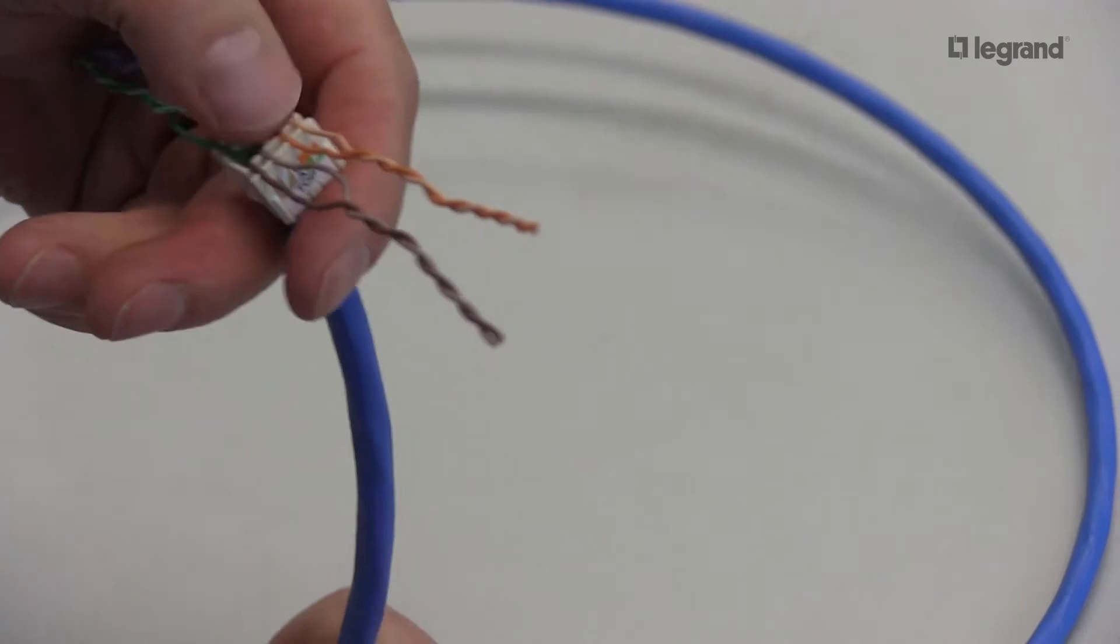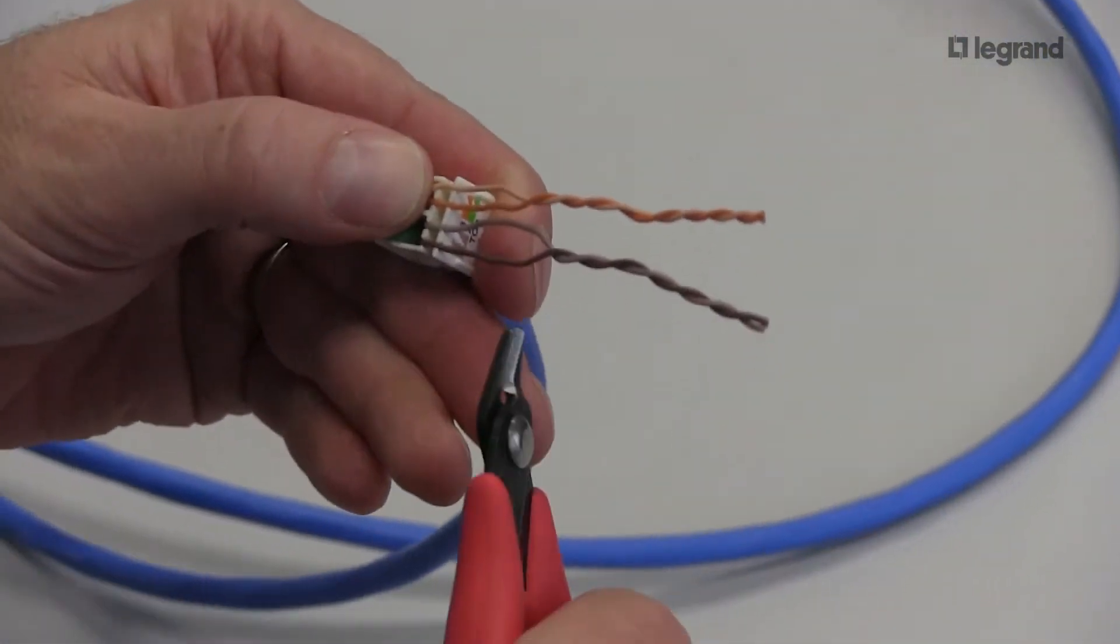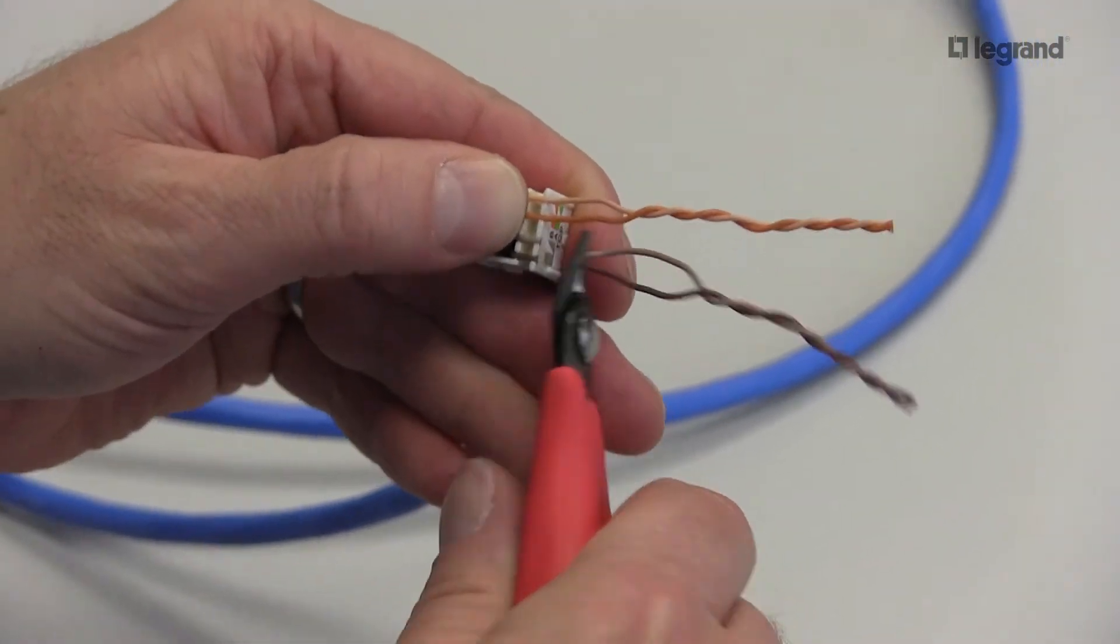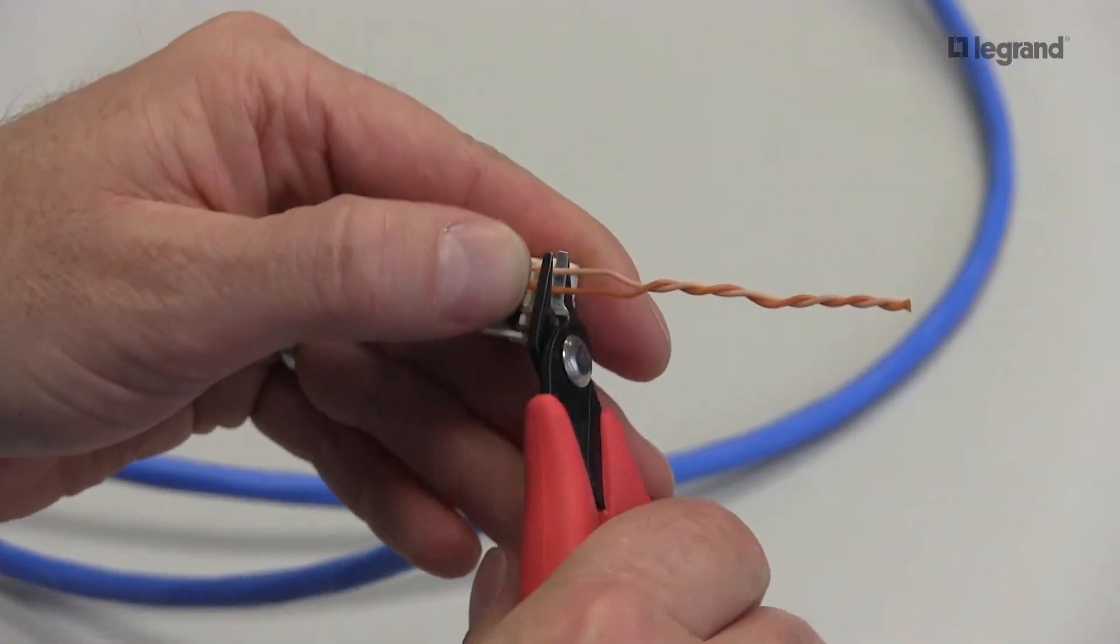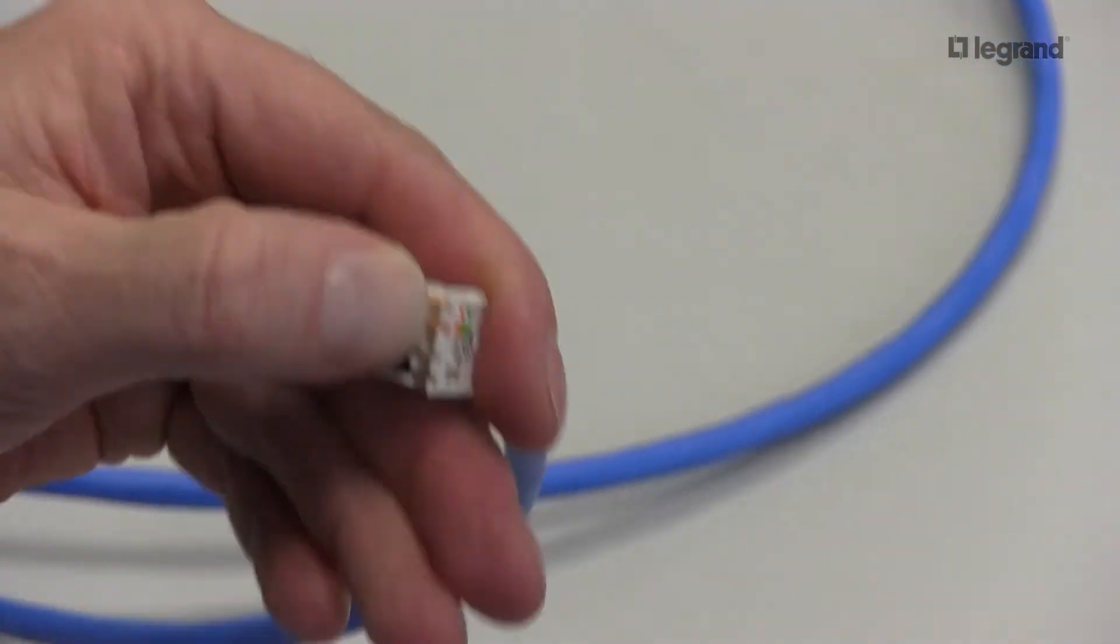Now again, you can use your scissors or your angle cutters. I'll show you the angle cutters first. What you need to do is cut them nice and flush to the corner of this lacing cap, like so.